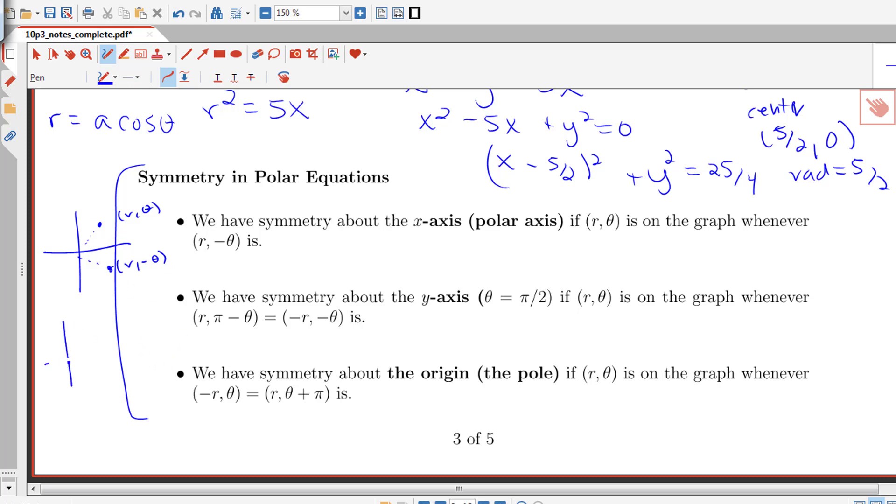We'd have symmetry about the y-axis if we have r theta on our graph as well as the point negative r negative theta, or that can also be represented as r, pi minus theta. So this is r theta, this point over here, negative r negative theta, because the idea is I could go down here negative theta and then backwards, this negative r to get into this quadrant.